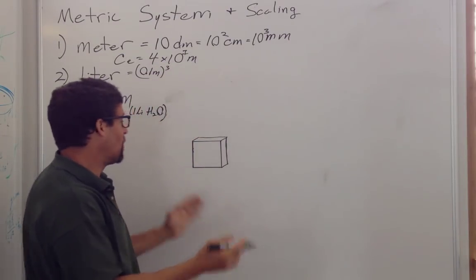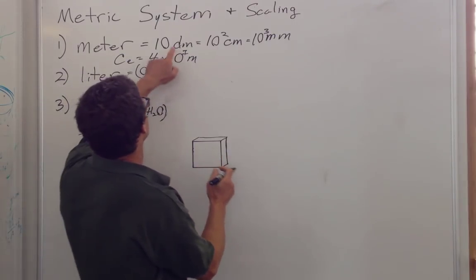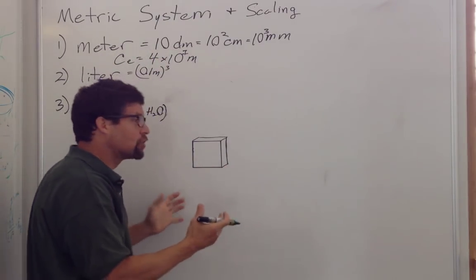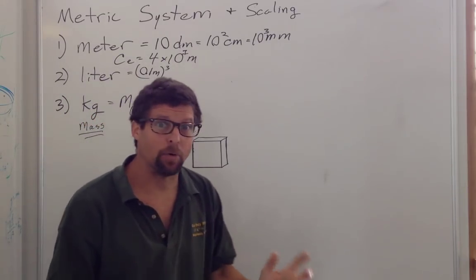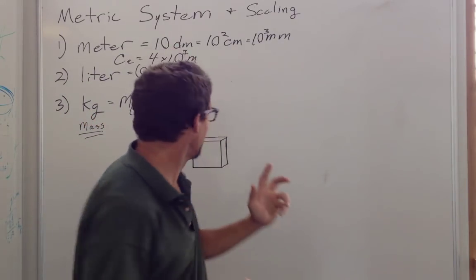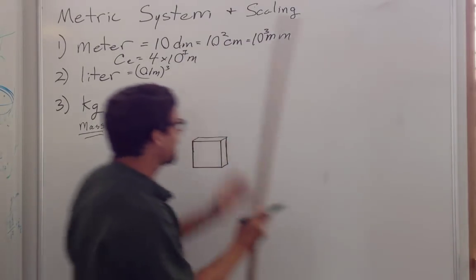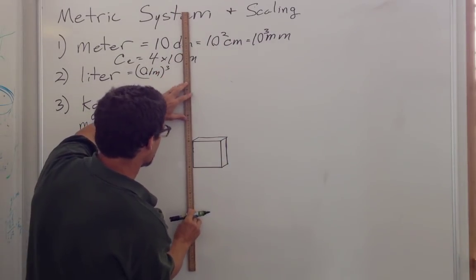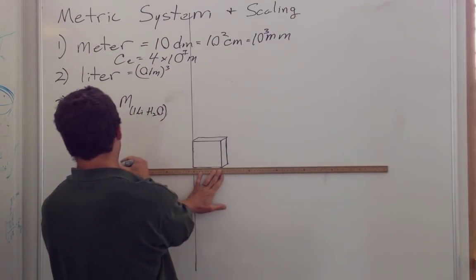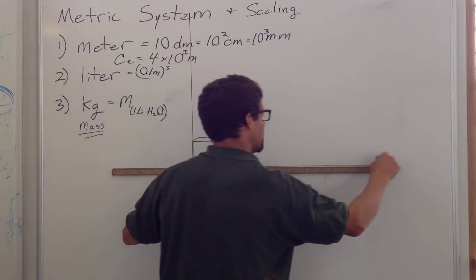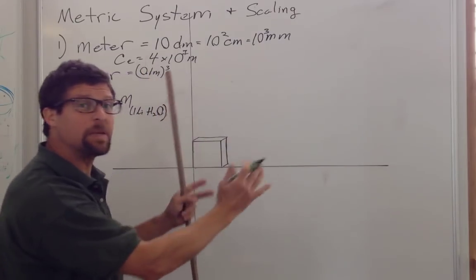And we might say, oh, well, there's 10 decimeters in a meter, so a cubic meter would have 10 meters. We could say that, but we'd be really, really wrong. Why? Because if we look at cubic meter, it would be 10 units high, it would be 10 units wide, and it would be 10 units deep.